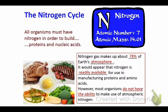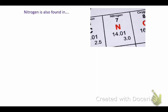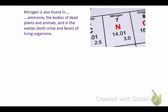Atmospheric nitrogen is actually N2 — that's what it looks like when it's in the atmosphere. Nitrogen is also found in ammonia, the bodies of dead plants and animals, and in the wastes — both urine and feces — of living organisms.